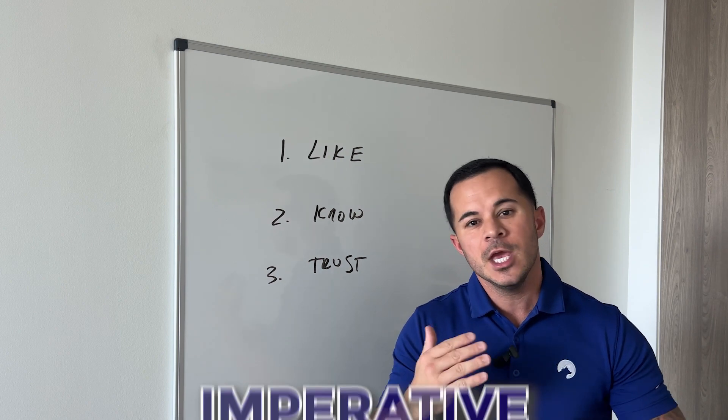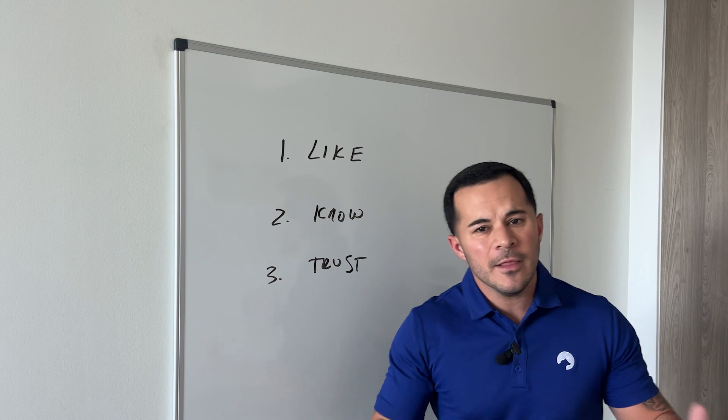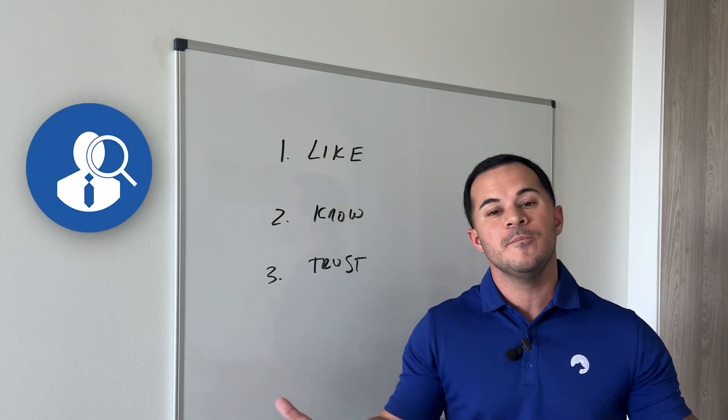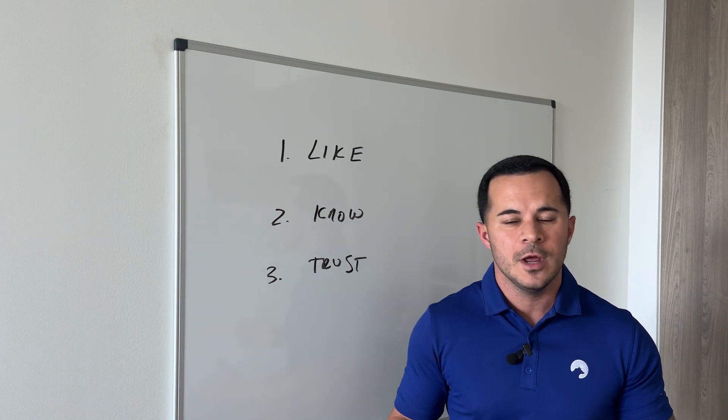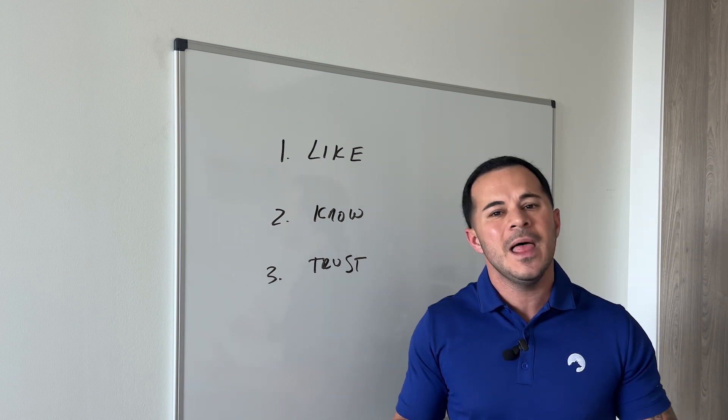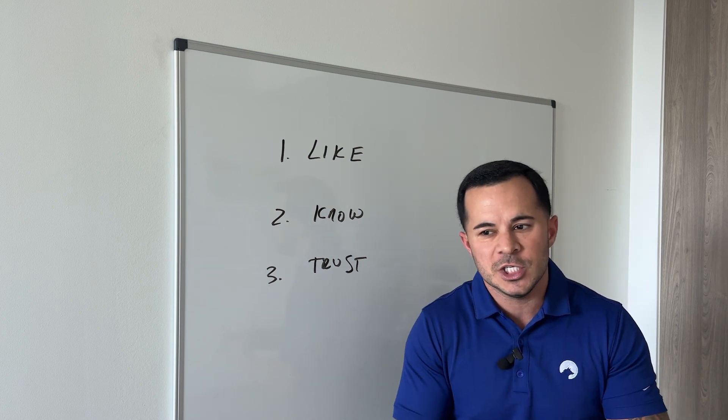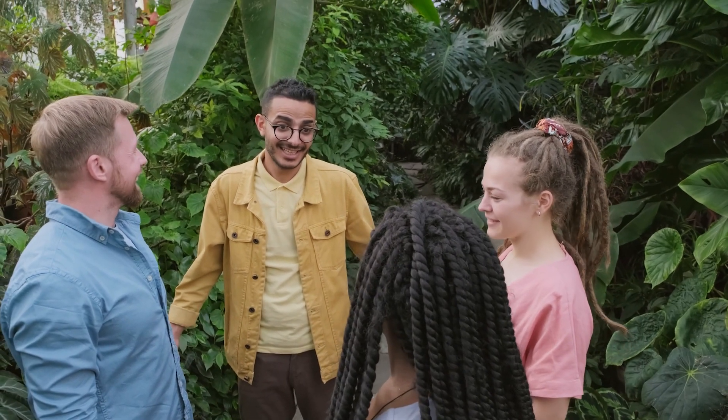So they got to like you. That comes from personality. It comes from building rapport, from common ground. We're tribal beings. We're communal beings. We want to be around people we like, people that are like us. So we're a tribal species. We hang around people that are like us.